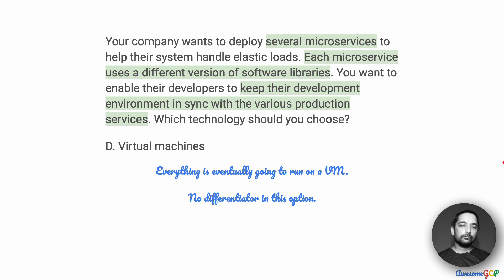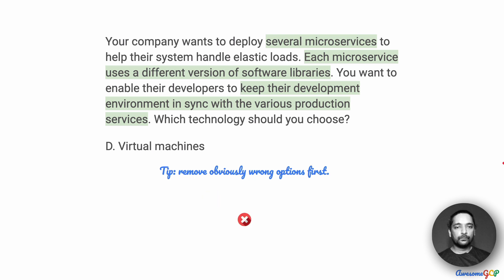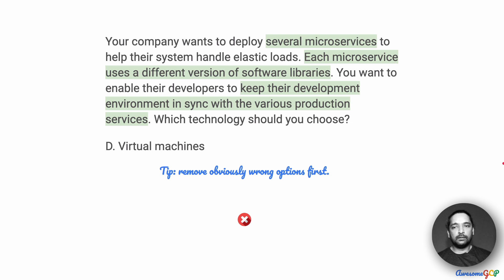Let's first look at option D, which suggests virtual machines. This is such a vague answer — everything is eventually going to run on a virtual machine, so there is no differentiator in this option. One tip: you can first remove the obviously wrong options, as just reducing the number of options will improve your chances of getting it right. Virtual machines being an obvious requirement for any kind of deployment is not going to have special differentiation compared to the other options. So option D is out.